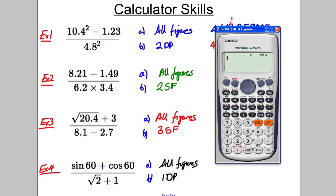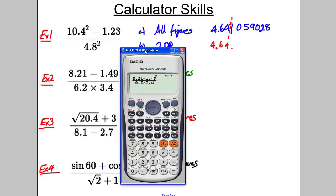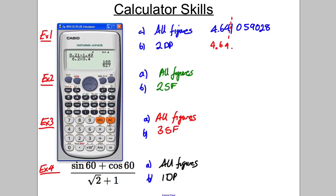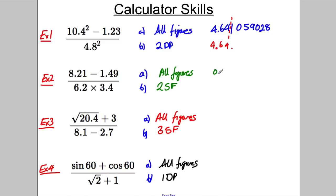So again, we've got a fraction. Press the fraction button. 8.21 subtract 1.49, down, and then press 6.2, this time it's multiplied by 3.4. Put your working by your question to check it looks exactly the same, it does, then press equals. You get a fraction, if you want to decimalise it, you press the SD button. So it's 0.3187855787.